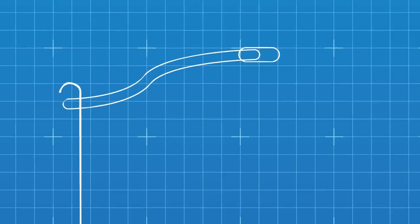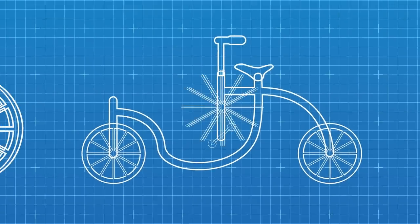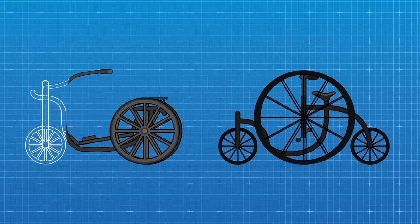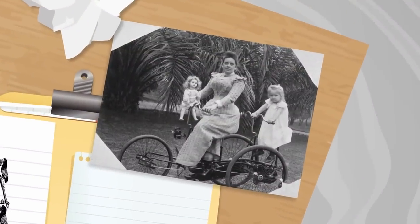So, around the 1850s, cycle enthusiasts added three and four wheels to the configuration and called them tricycles and quadricycles. The quadricycle could fit up to three people, but was very heavy to push.